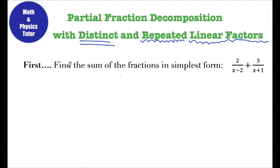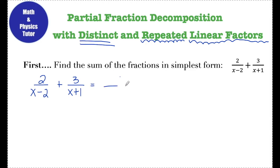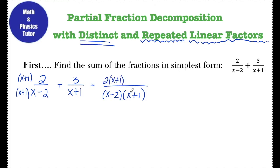The first thing we're going to look at is finding the sum of two fractions in simplest form. I'm going to add these two fractions together, and you'll see why when I get to the end of this example. When I have 2 over x minus 2 and 3 over x plus 1, I need to find a common denominator. The common denominator is x minus 2 times x plus 1. To get the first fraction to have this denominator, I multiply top and bottom by x plus 1 over x plus 1, giving me 2 times (x plus 1) in the numerator.